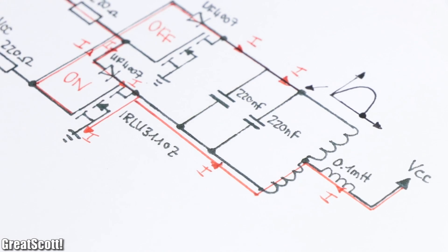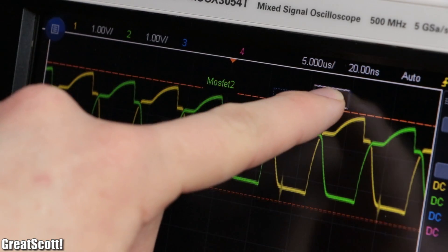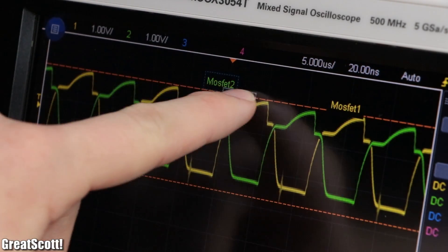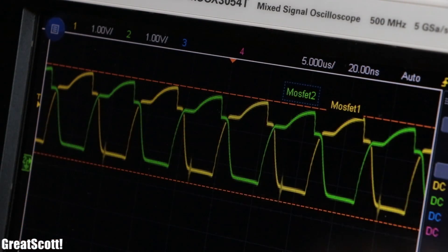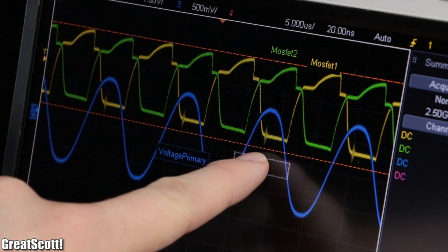And just like that, both MOSFETs turn on and off one after the other, and thus in combination with the resonance circuit, create a sinusoidal voltage and current.